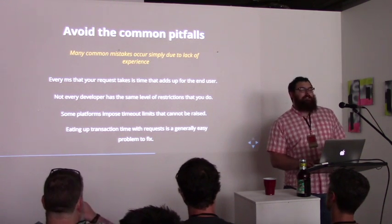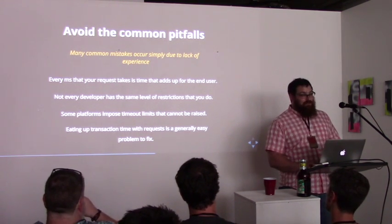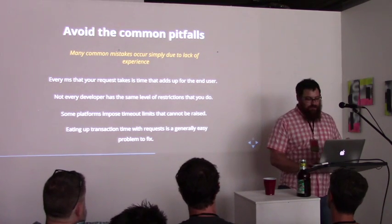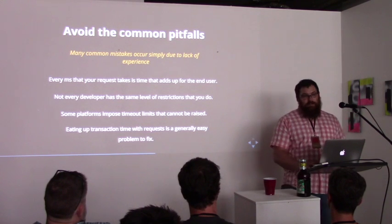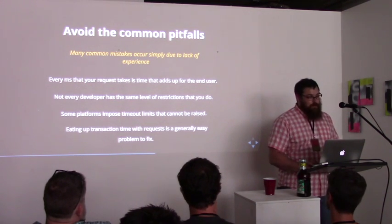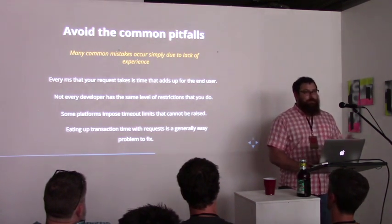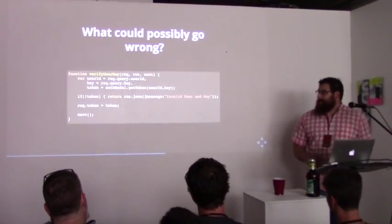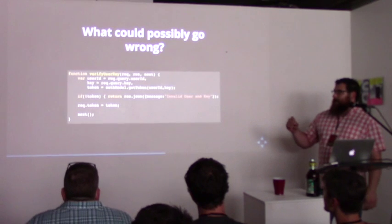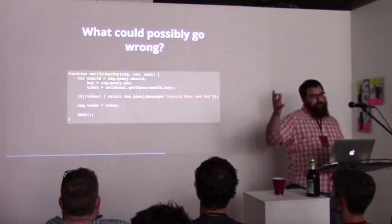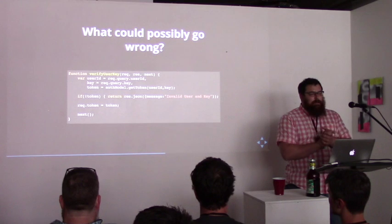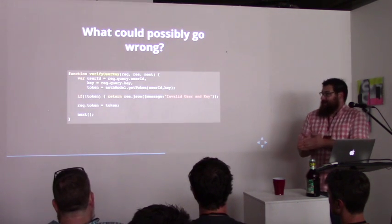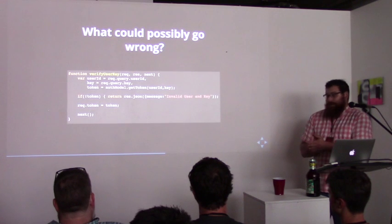These transaction times are actually a really easy problem to fix. I'm going to walk through some code — it's pretty straightforward, based on Node if you're familiar with JavaScript, but even if you do Ruby or something, you should be able to keep up. I'll use this example of what could possibly go wrong in this hypothetical API endpoint.